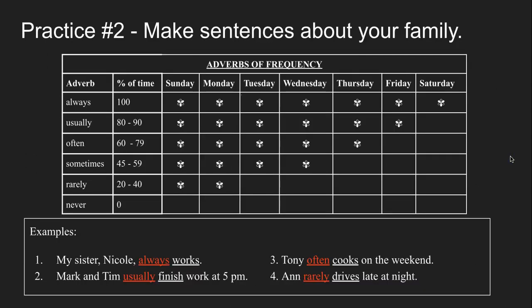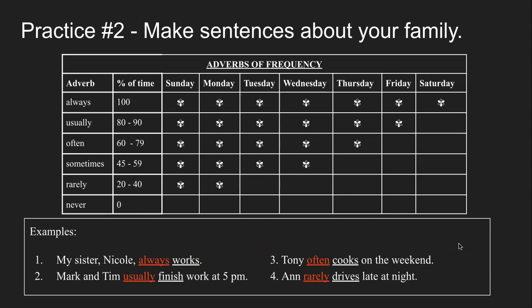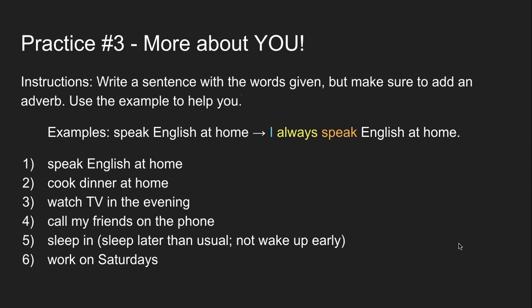Now for practice number two. Try to make sentences about your family and their schedule. Think about the adverbs: always, usually, often, sometimes, rarely, never — and think about the percentage. Try to make sentences about your family. Here are some examples to help you get started. Pause the video to make 10 sentences about your family.